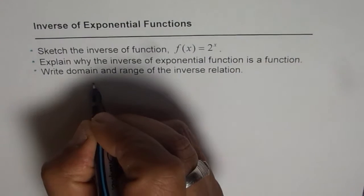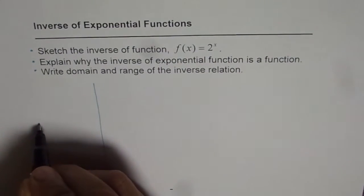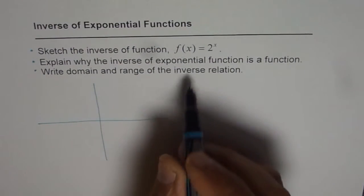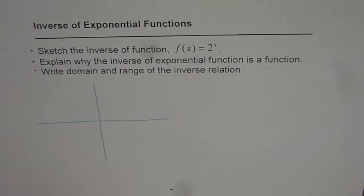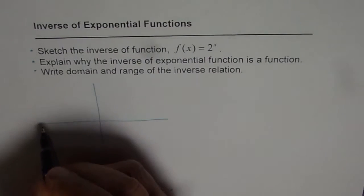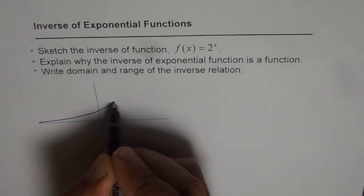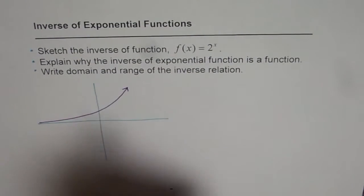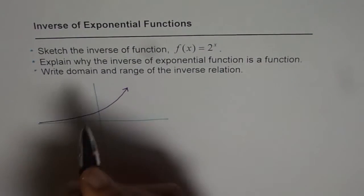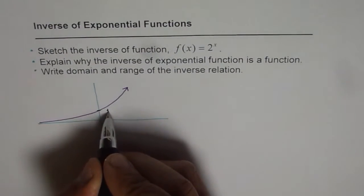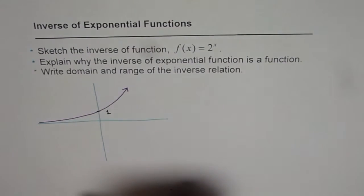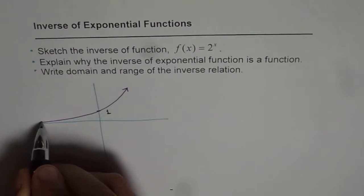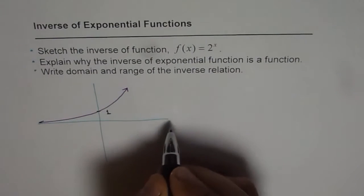Let's start with sketching the function first, and then we'll sketch the inverse. 2^x, as we know, is always rising. The y-intercept is always 1 since anything to the power of 0 is 1, and we have a horizontal asymptote here, which is the x-axis.